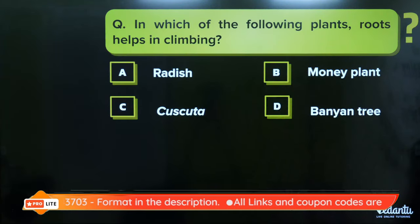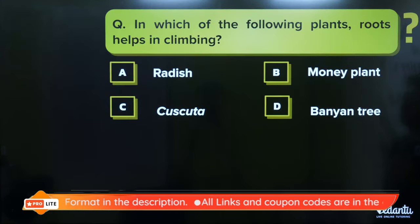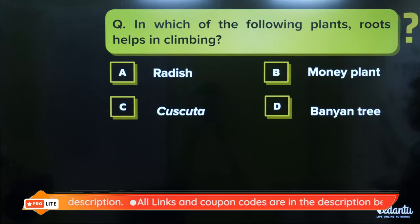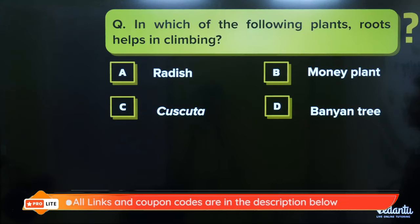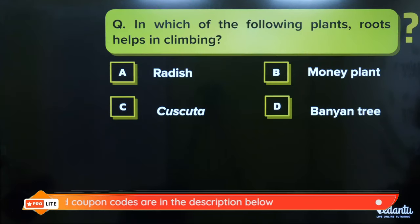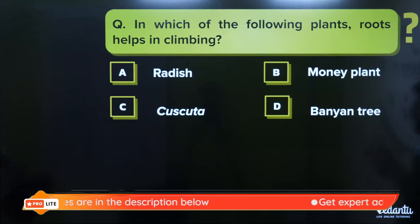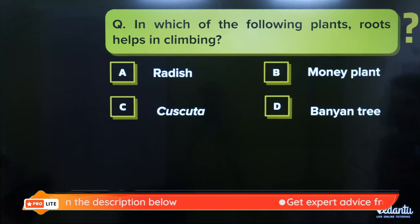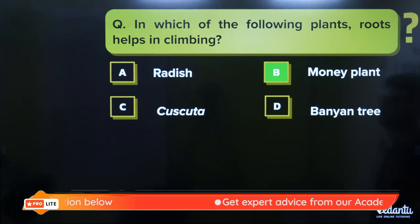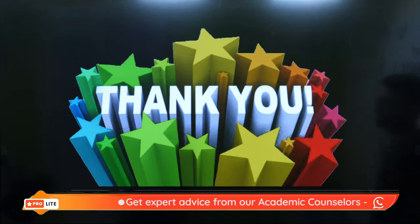In which of the following plants do roots help in climbing? Radish has food-storing roots. Money plant has climbing roots. Cuscuta has parasitic haustoria roots. Banyan tree has prop roots. So money plant is the correct answer to this question.